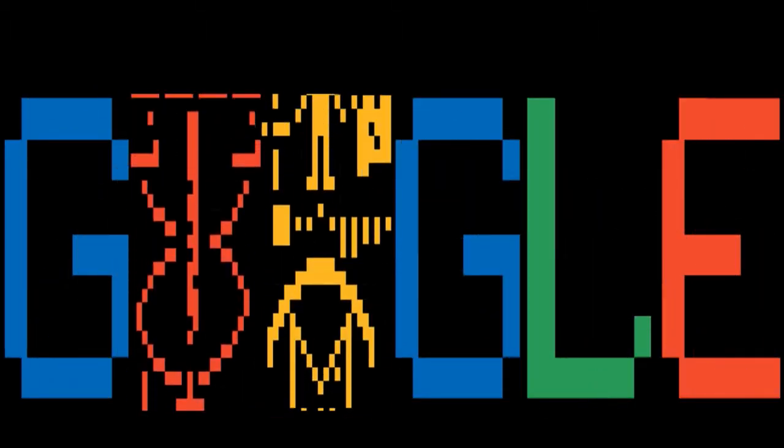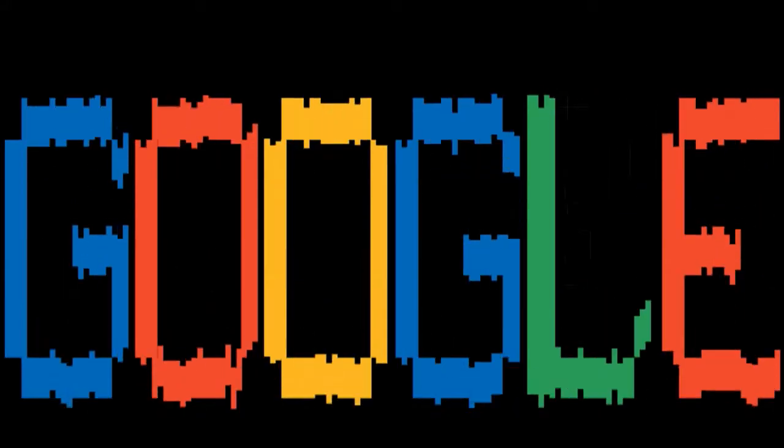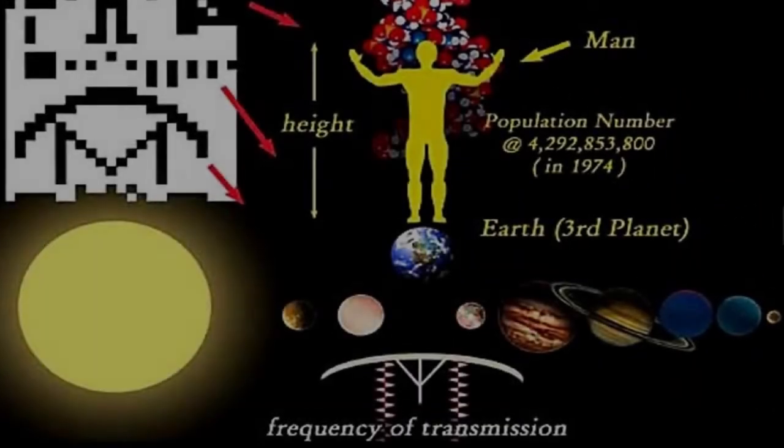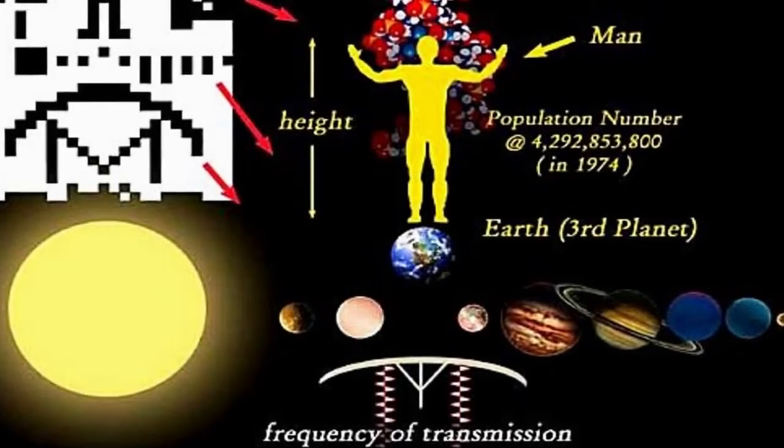The Arecibo message is a 1974 interstellar radio message carrying basic information about humanity and Earth, sent to globular star cluster M13 in the hope that extraterrestrial intelligence might receive and decipher it.